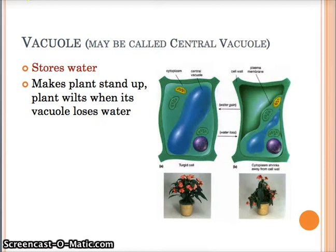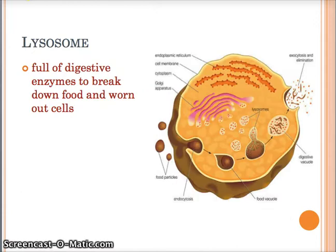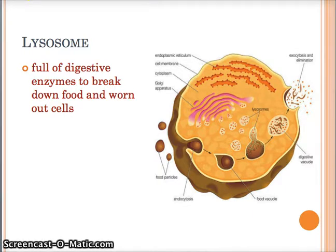Next we've got the vacuole. Vacuoles are only in plants and what they're good for is storing water. The central vacuole is what makes the plant stand up - if there is no water in the central vacuole, it's going to wilt and die. Next we've got the lysosome - this has enzymes in it. The lysosome has enzymes that break down food for the cell, and those enzymes also break down any dead or worn-out cells. Lysosomes are mostly in animals.